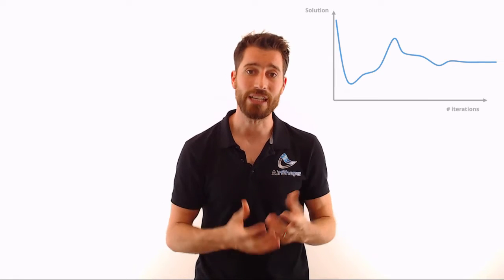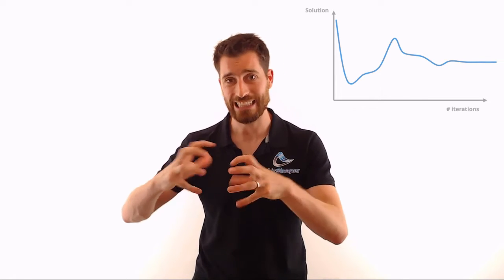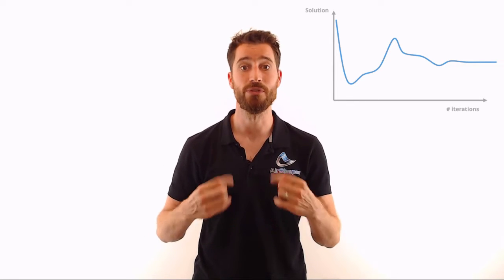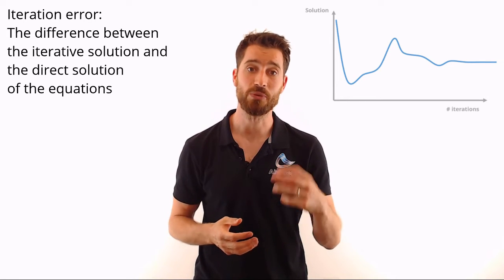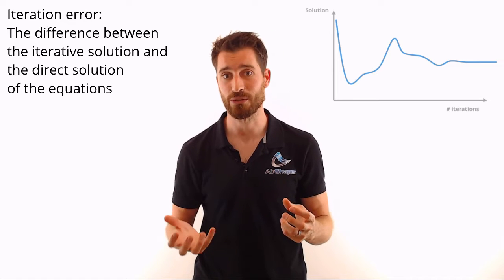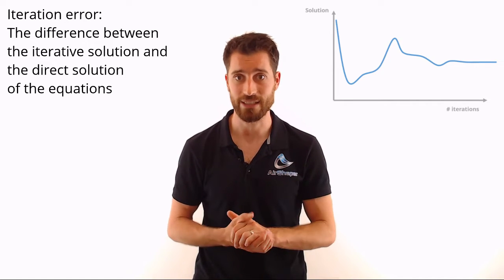This is where the faster iterative methods come in. They start by guessing an initial solution, which could even be a standstill or zero velocity flow field. Then they linearize the equations and start to improve the solution by iteration. The longer you iterate, the more you converge to a stable flow field, and the more you reduce the iteration error. The difference between this solution and the direct solution of the equations is called the iteration error.